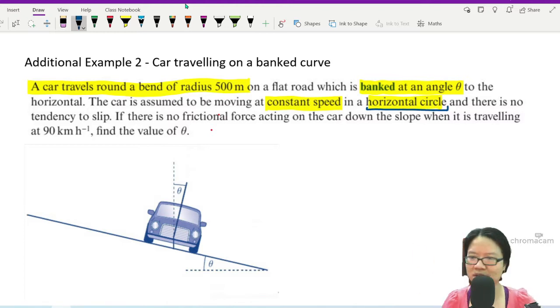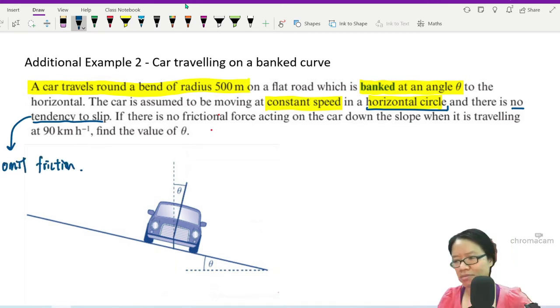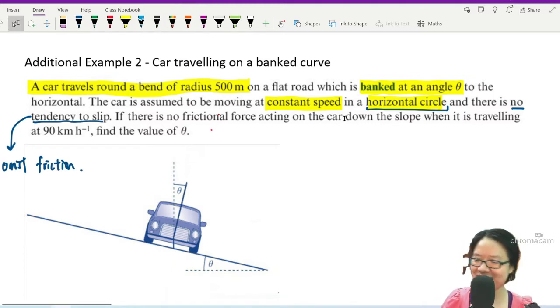There's no tendency to slip. If there's no tendency to slip, this means we omit friction. Friction only exists if there is slipping or moving around, so we omit friction or ignore friction.